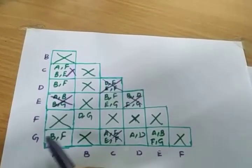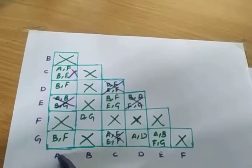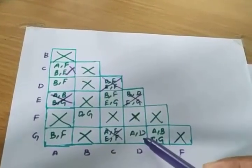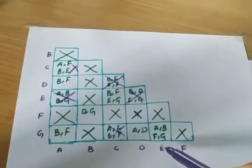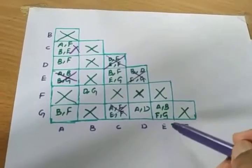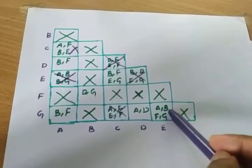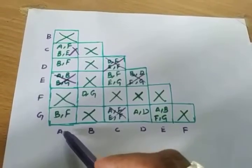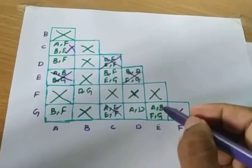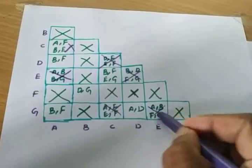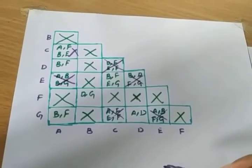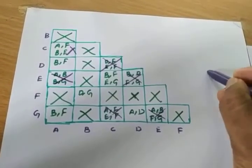The DG column has entry AD. Check AD — A and D have no cross mark, so we can take this. Now check the EG column — it has entry AB. AB is crossed, so we need to cross EG. That completes the second pass.